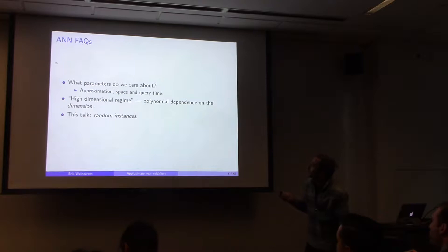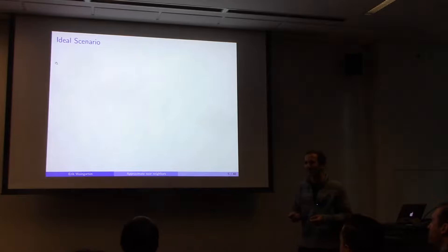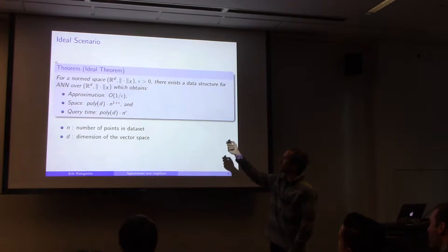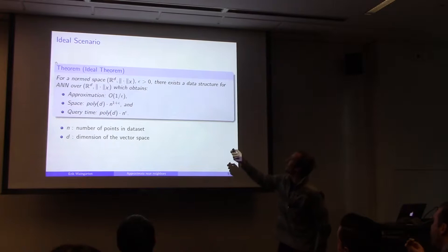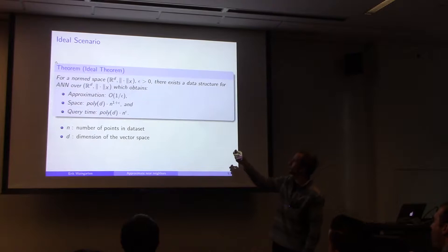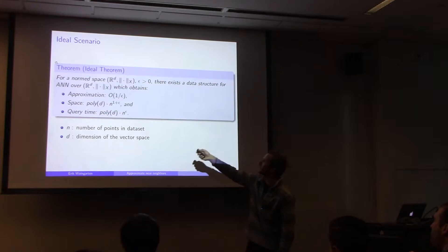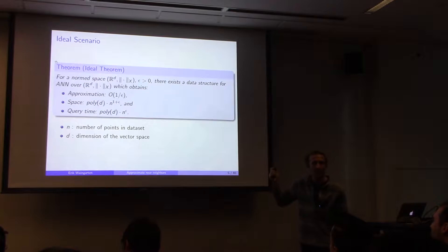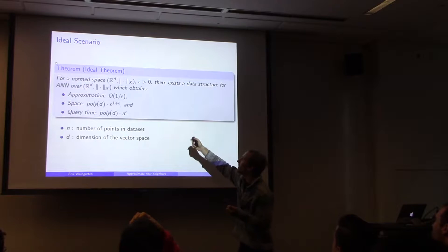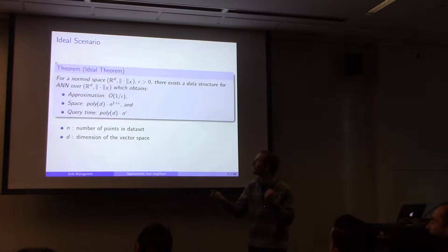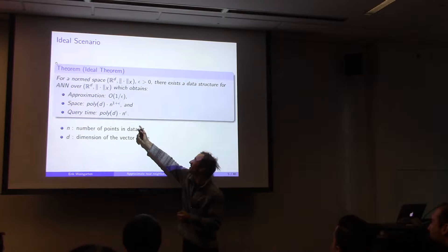Let me give you the ideal theorem I'd like to prove. Fix a norm space over R^d, and any epsilon greater than zero. I want a data structure for the approximate near-neighbor problem over this norm that gets approximation of order 1/epsilon, using space polynomial in d times n^{1+epsilon}, and query time polynomial in d times n^epsilon. Think of epsilon as like 0.1 — you give up a little on space but get poly-d times n^{0.1} query time.